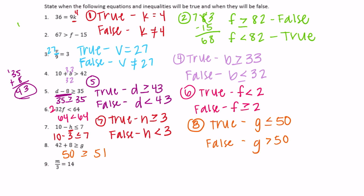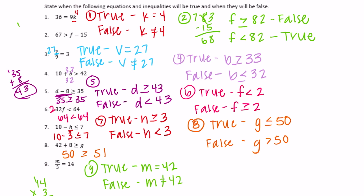Number nine: m over 3 is equal to 14. What divided by 3 is 14? We can figure that out by doing 14 times 3, which is 42. So it would be true if m is equal to 42, and false anytime m is not equal to 42, because it must be exactly equal to 14.